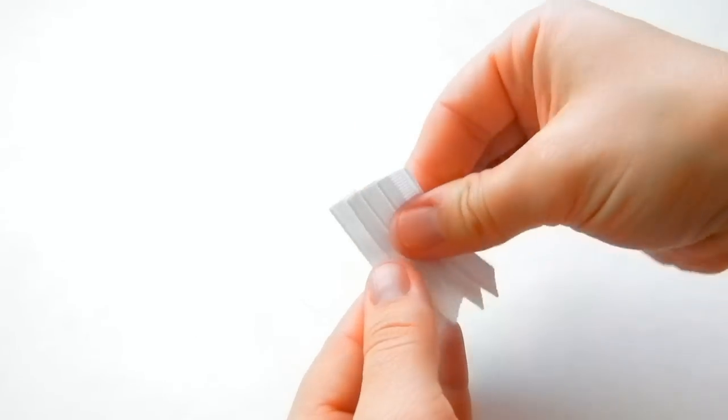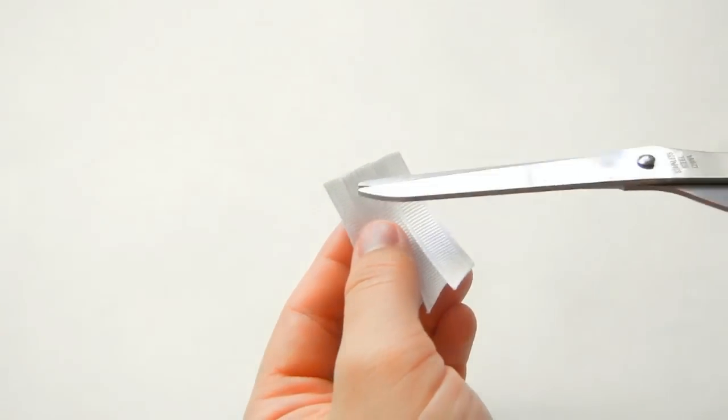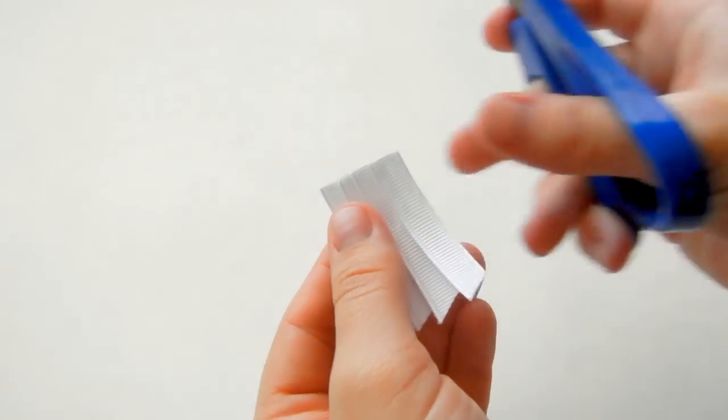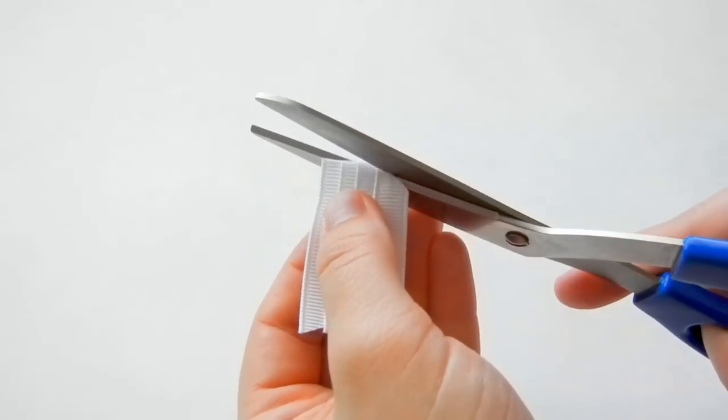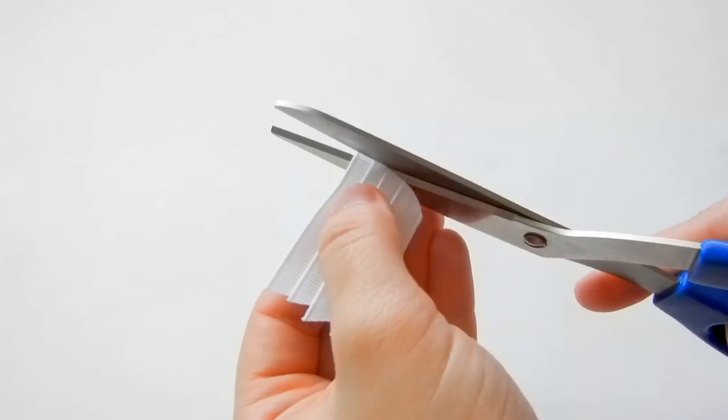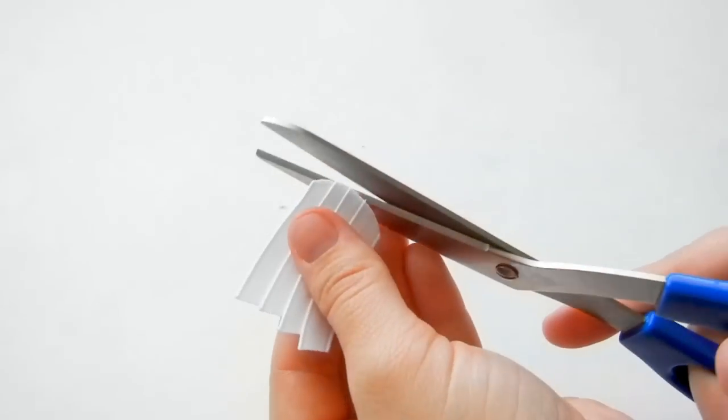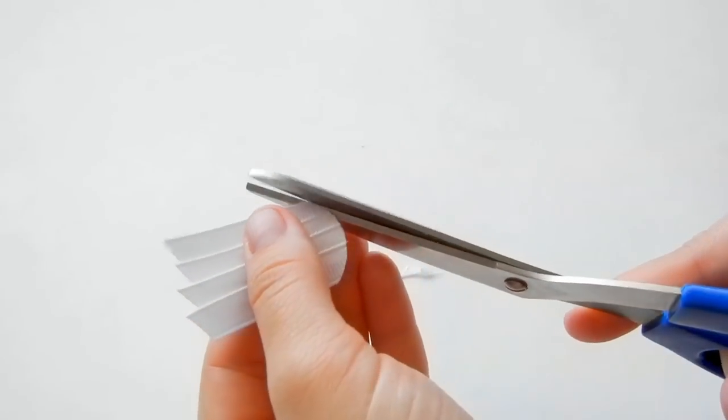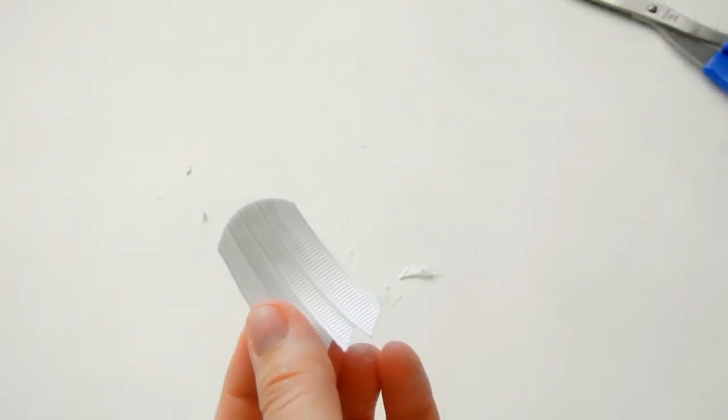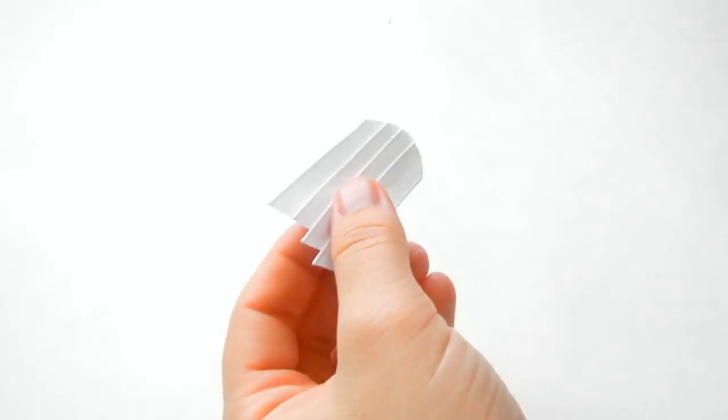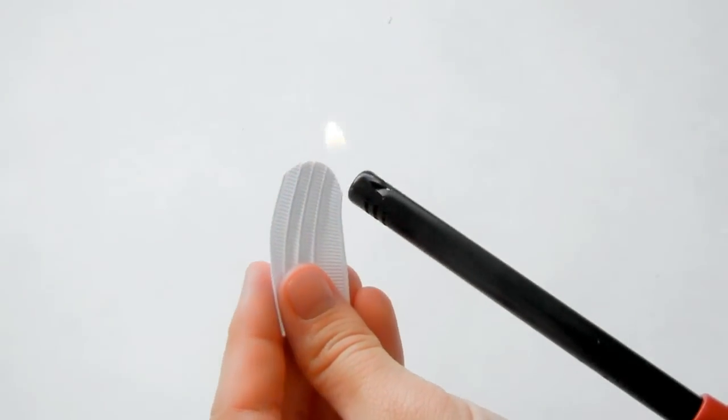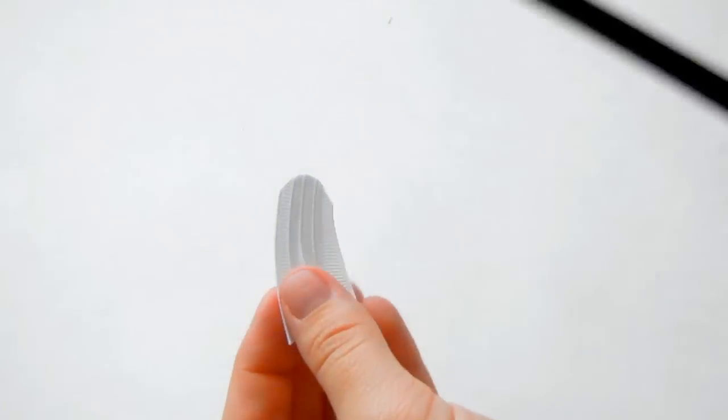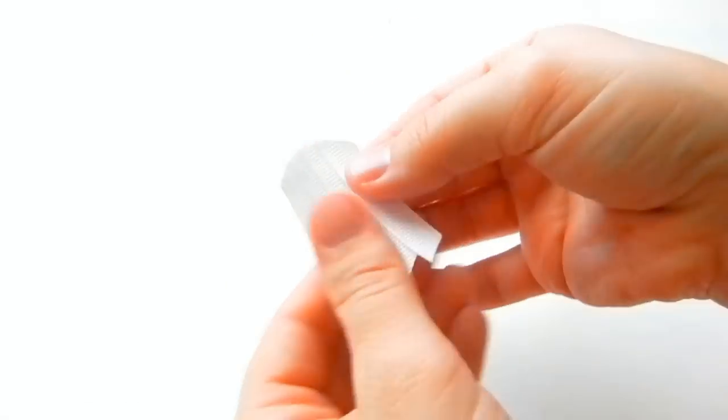Now we're going to take our scissors again and we're just going to round the top with our scissors. And then after you round the top, we have to take our lighter again and just seal the ends that we just cut. And that is how you make the ghost body.